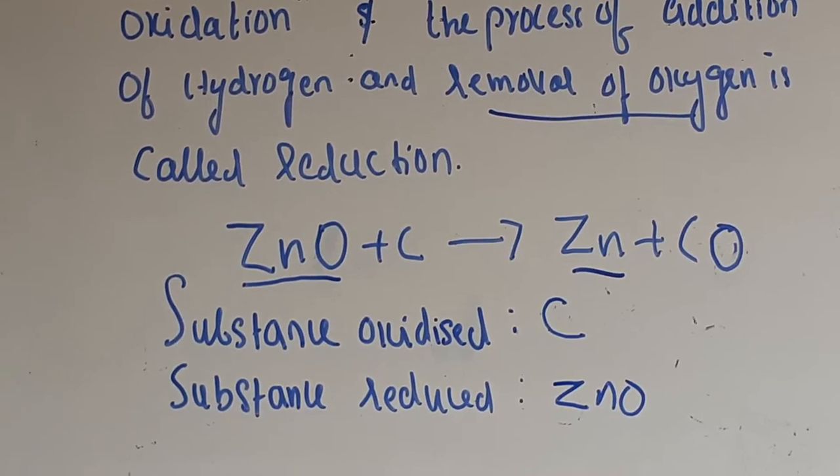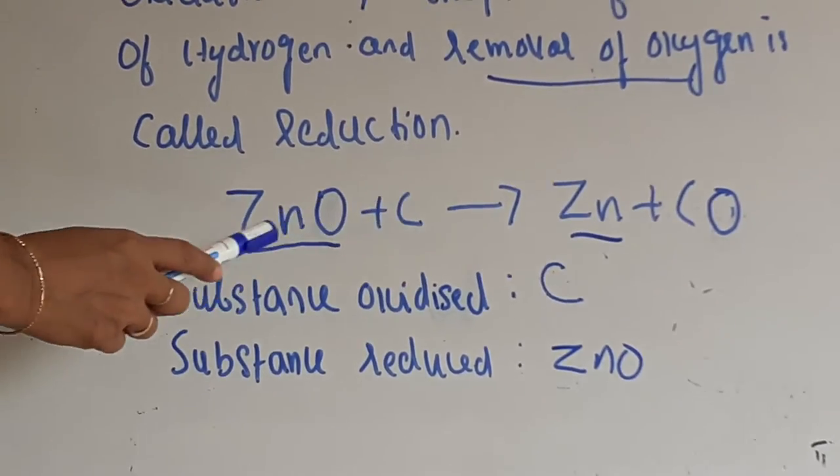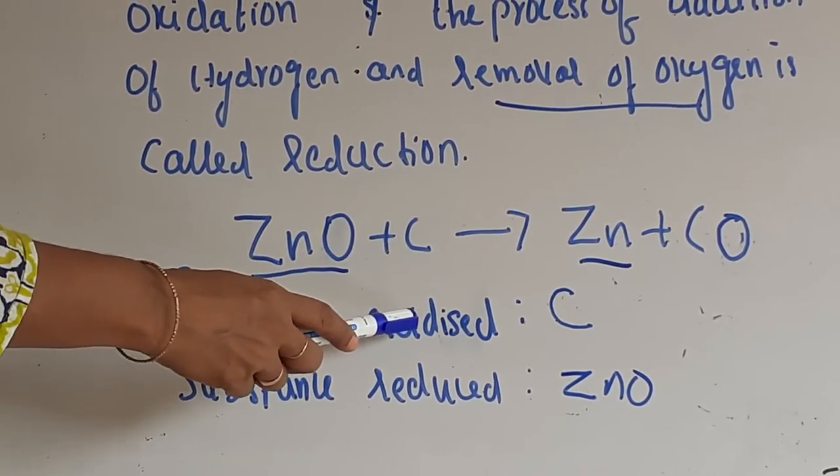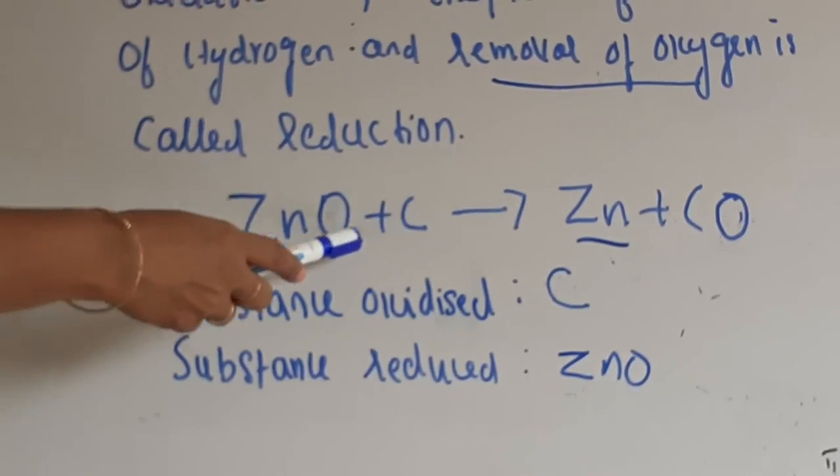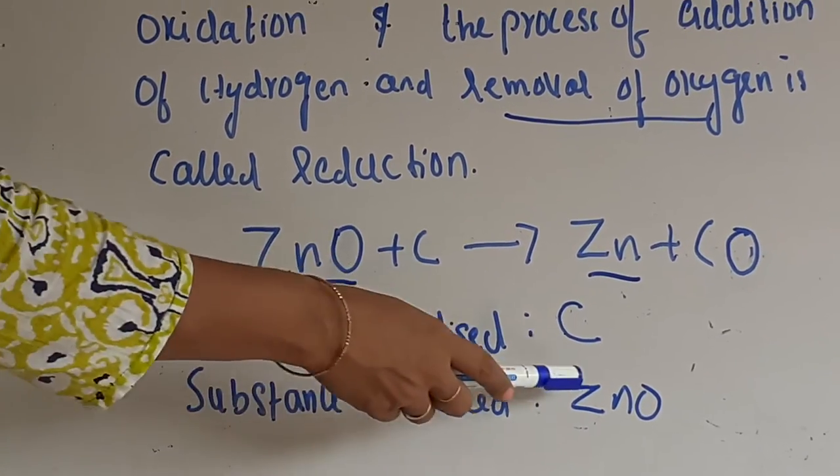Now please don't write - I have several times seen students writing CO here. No. Substance oxidized, when you get a question you have to write only from the reactant side. So substance oxidized: C. Substance reduced: ZnO.